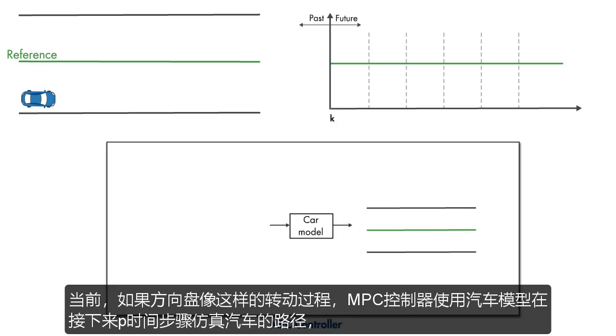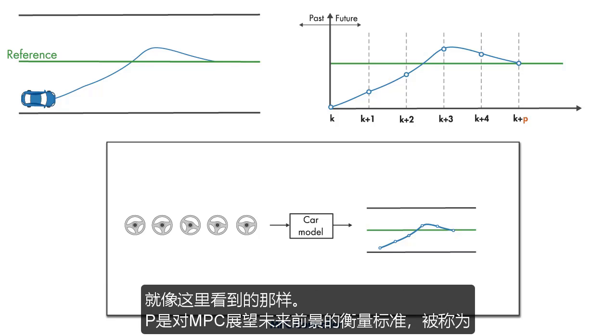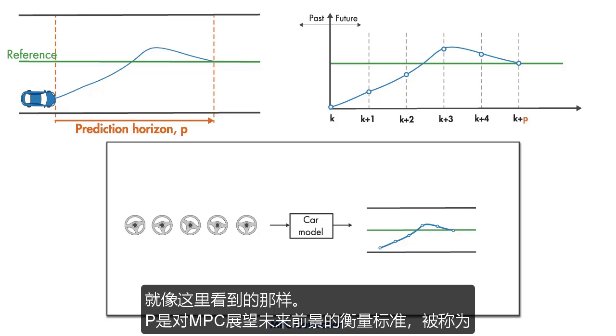At the current time, the MPC controller uses the car model to simulate the car's path in the next P time steps if the steering wheel would be turned as seen here. P is a measure of how far ahead MPC looks into the future and is referred to as the prediction horizon. It's often represented by the length of time into the future or the number of future time steps.